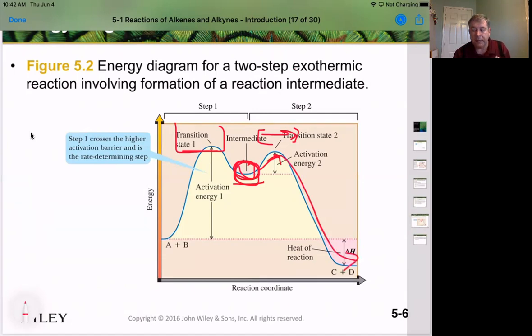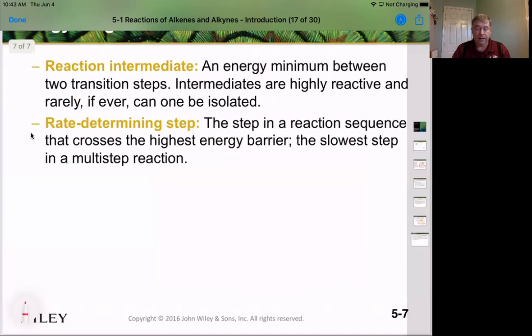In this case, we call it an exothermic reaction because the heat of the products is lower than the heat of the starting material, meaning we gave heat off in the reaction. If this cascaded down and ended up here, that would indicate we have an endothermic reaction because we have heat absorbed by the products compared with the heat energy in the starting materials. So again, to reiterate, the reaction intermediate is a highly reactive species, but it can be isolated.